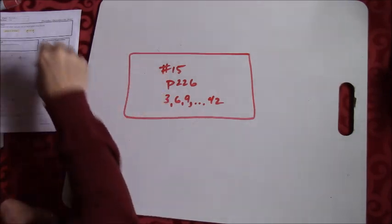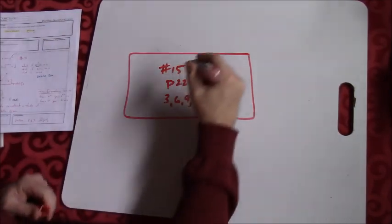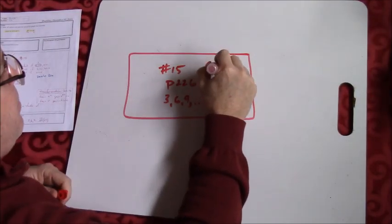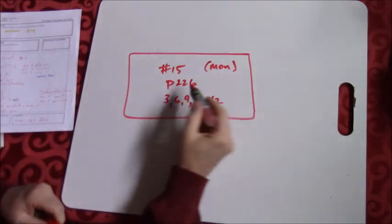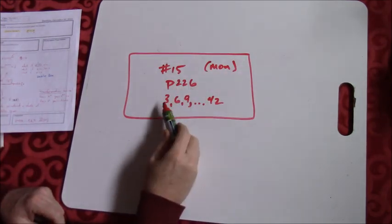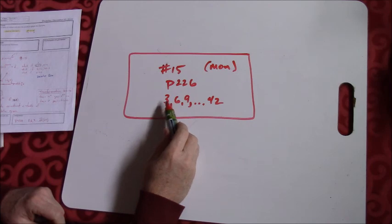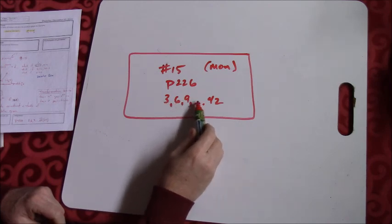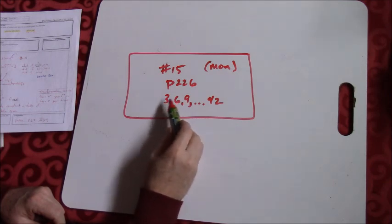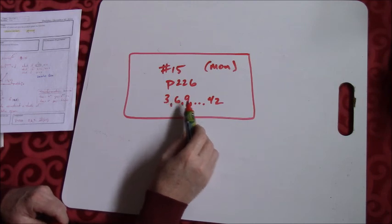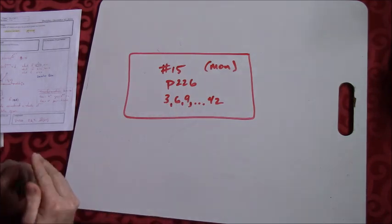Let me get you guys a homework assignment. So this is assignment number 15. This is our Monday portion. We're on page 226. We're going to do every third problem. So 3, 6, 9, dot dot dot, all the way up to 42. If 3 divides into it evenly, do it. If 3 does not divide into that number, don't. That's a good way to check and make sure you don't get off with your counting.